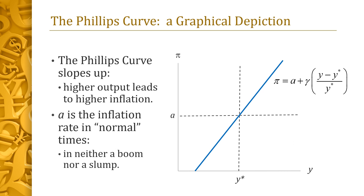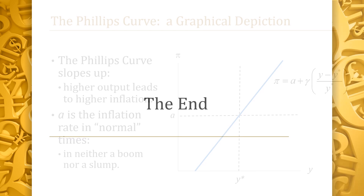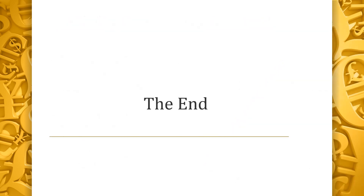Thus, little a can be interpreted as the inflation rate in normal times, when the economy is neither overheated nor in a recession. This concludes the pre-lecture video on the Phillips curve and Okun's law. Thank you for watching.